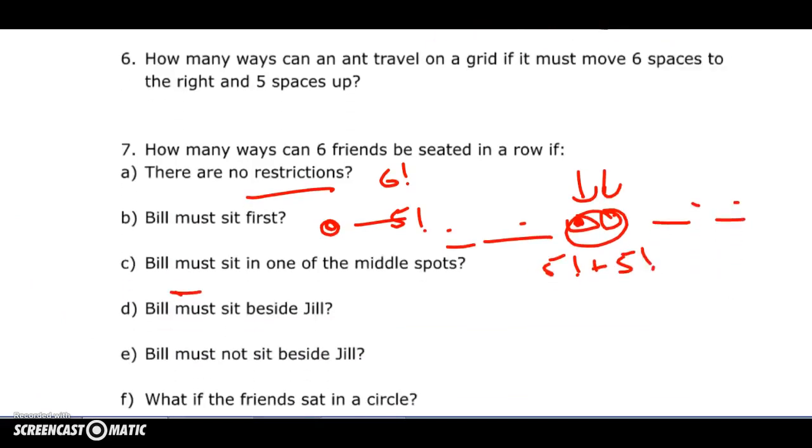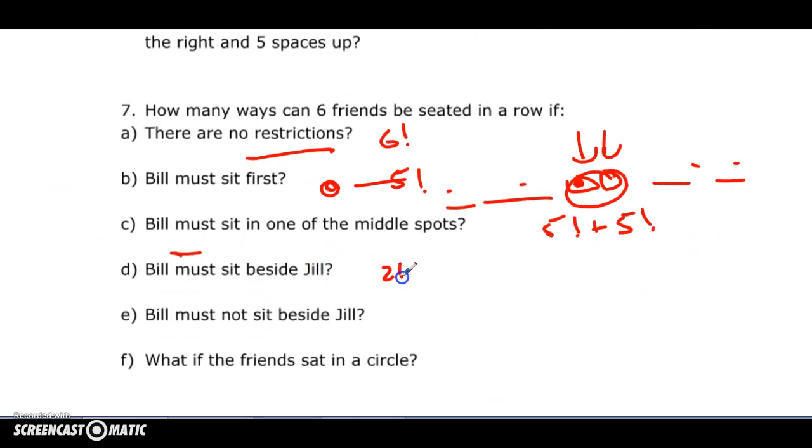Bill and Jill must sit together—we've done this a bunch of times now. You put them together in 2 factorial ways, then they're a single entity so you line up the five things. Bill must not sit beside Jill—best way to do that is to get the answer from a and subtract the answer from d. And if we sit in a circle, you take the six, you subtract one, which is 5 factorial.